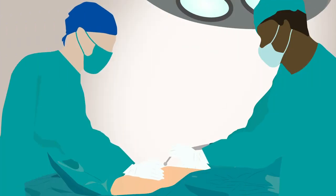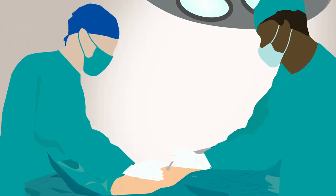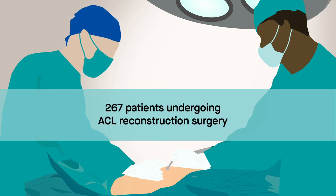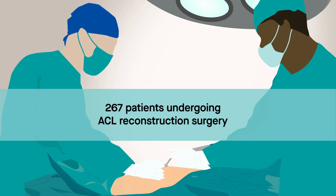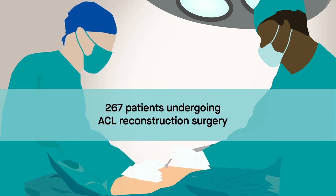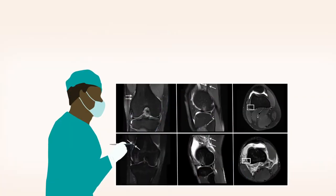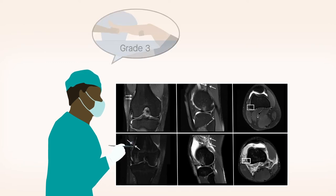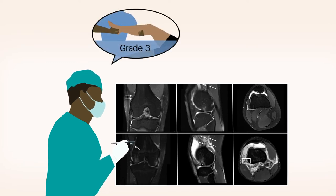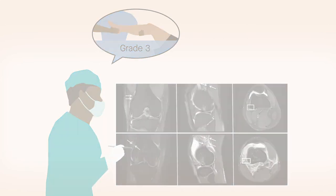To find out, researchers examined data for 267 patients with ACL-injured knees undergoing reconstruction surgery. They analyzed MRI scans to determine the extent of Kaplan fiber injury and correlated those findings with the grade of pivot shift reported by the surgeon before operation.